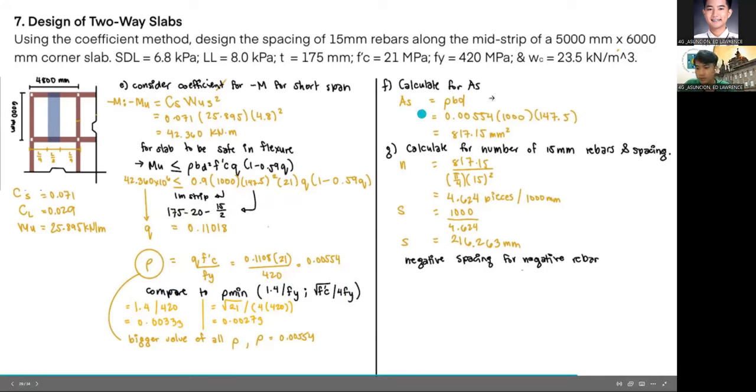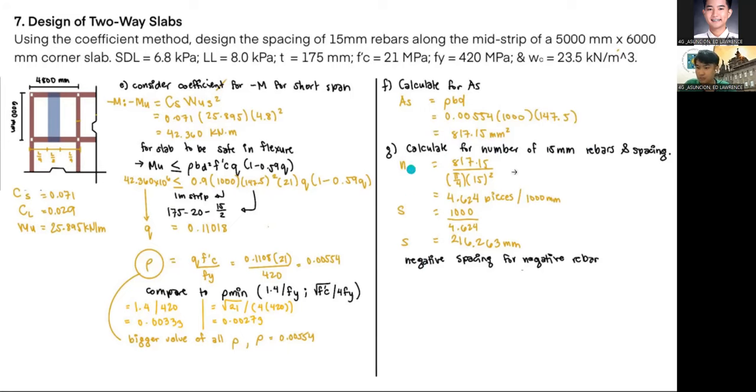Our next step is to calculate for As, which is ρ bd, and it equals 817.15. Calculate for number of 15mm rebar and spacing for the negative moment. So n equals 4.64 pieces per 1,000 millimeters, then s equals 1,000 over 4.624, giving us the value for s, which is 216.263 millimeters.